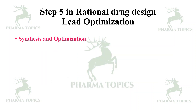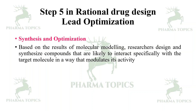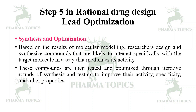The next step is lead optimization. You synthesize the leads and optimize them based on the results of molecular modeling or molecular dynamics. Researchers design and synthesize compounds likely to interact specifically with the target molecule in a way that modulates its activity. These compounds are then tested and optimized through iterative rounds of synthesis and testing to improve their activity, specificity, and other properties.